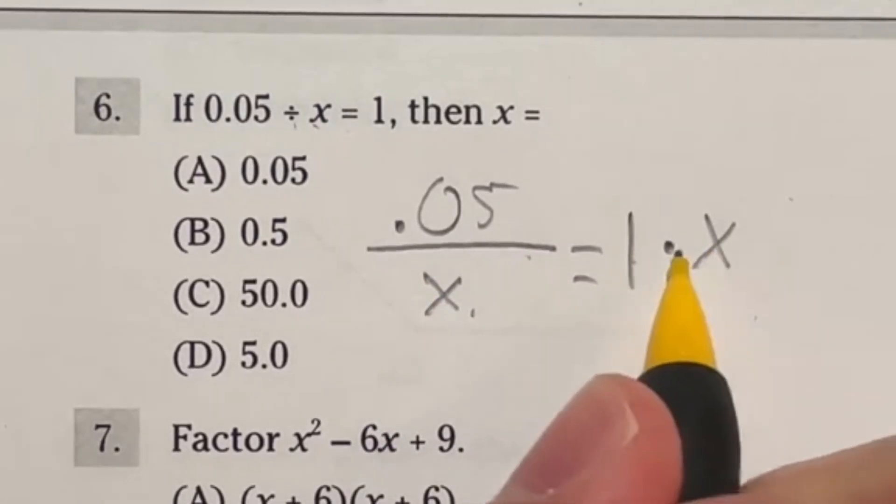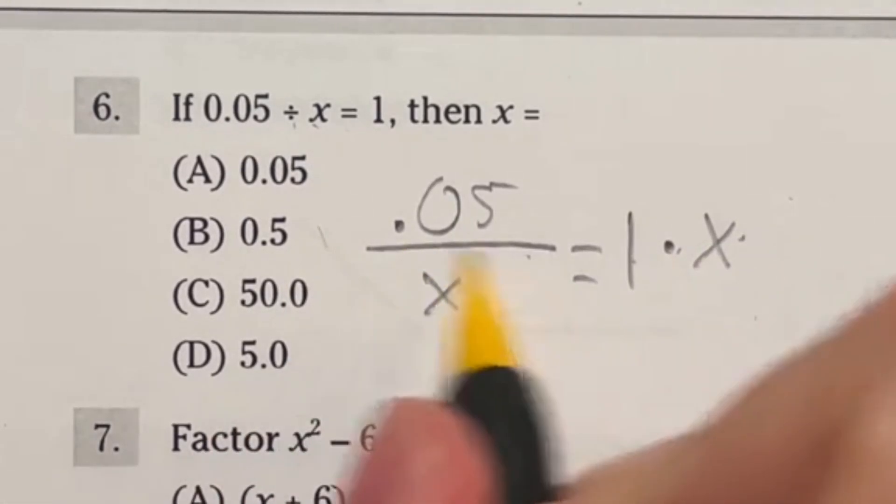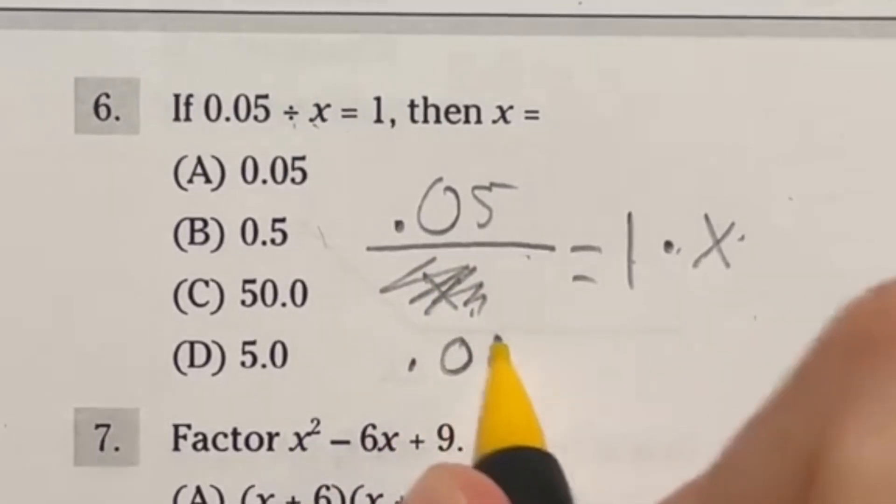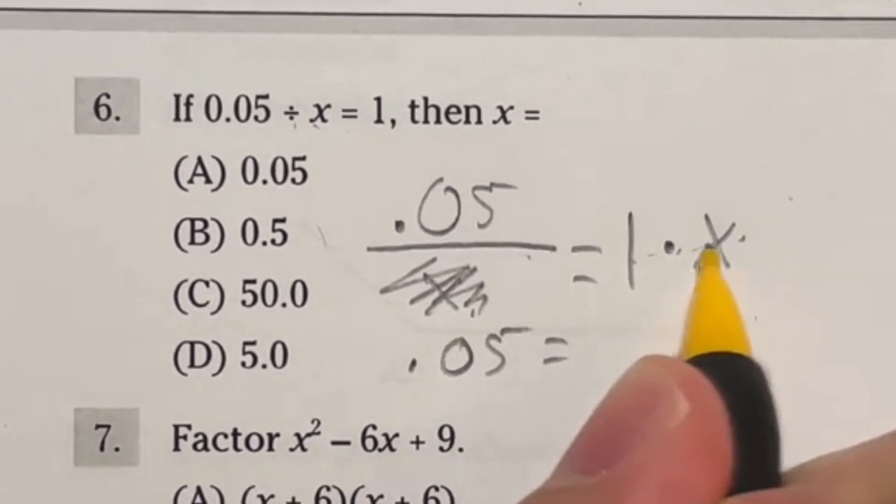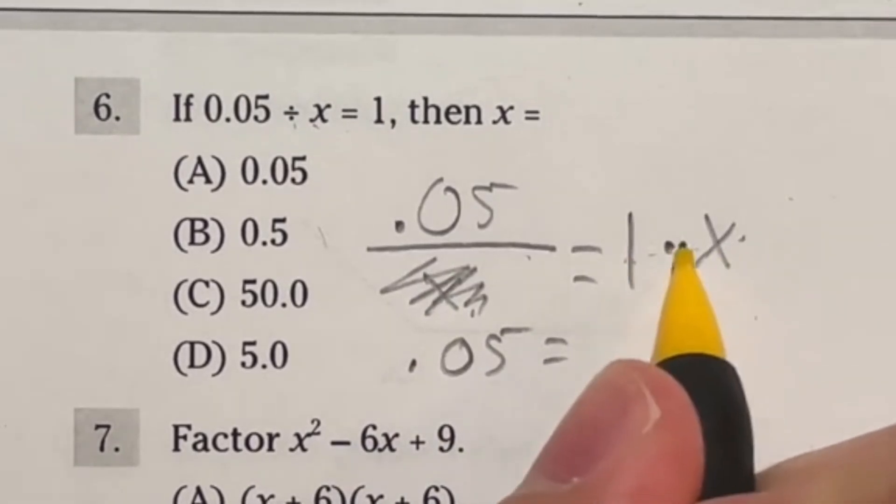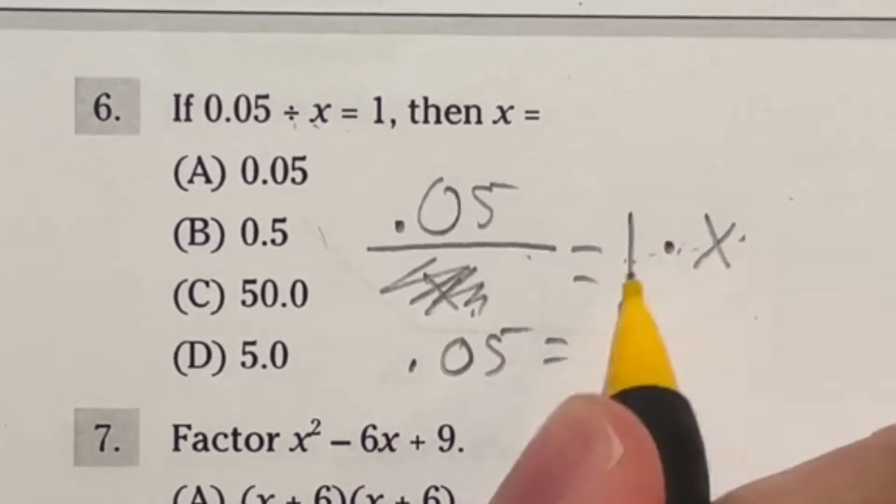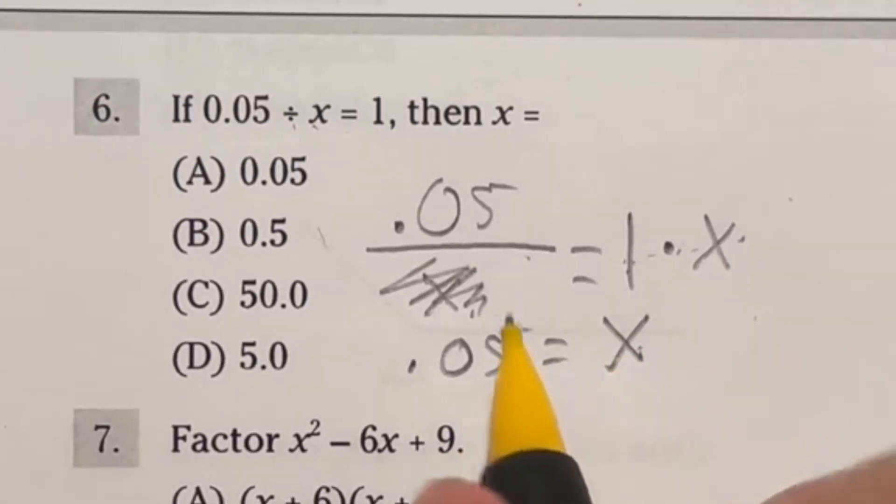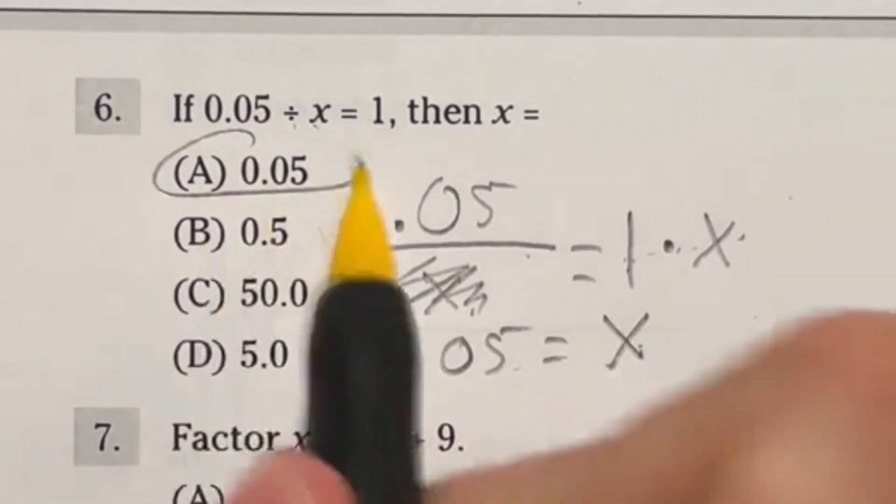When you're dividing, the opposite of dividing is multiplying, so you multiply both sides by x. You get one times x over here, and the x times the divided by x cancel out. So I'm just left with 0.05 equals one times x. But we know that one times any number is just that number. So x is equal to 0.05. That means our answer here is going to be A.